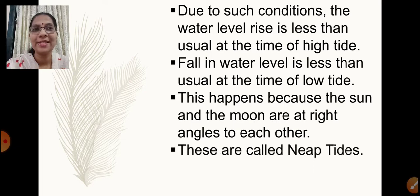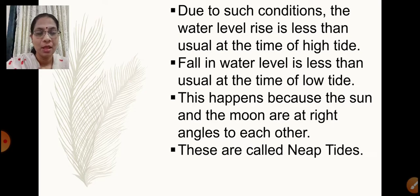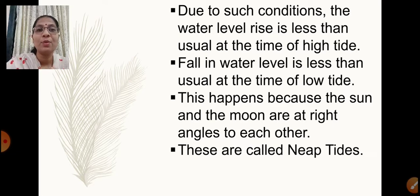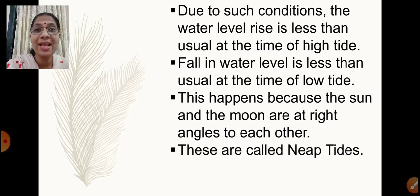Such tides are called neap tides. Neap tides occur on the first and the third quarter of the month, twice a month, when the sun, moon, and earth are at right angles. As a result, since the forces act in two different directions, the water level which rises is less than the usual time of high tide, and the water level which falls is also less during low tide. The tides occurring on these days are called neap tides.